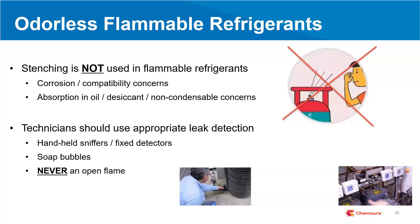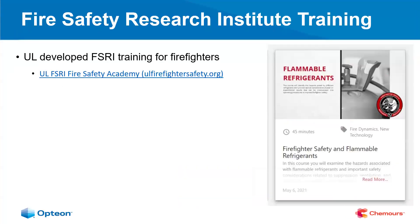Soap bubbles — a tried-and-true method — can still be used with A2Ls because they work off of pressure just like with A1 refrigerants. However, you should never use an open flame for leak detection with any refrigerant. It was never a good idea with an A1 refrigerant, and it's especially not a good idea with a flammable refrigerant.